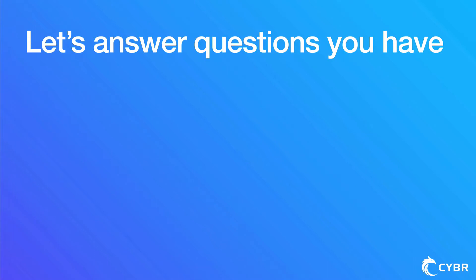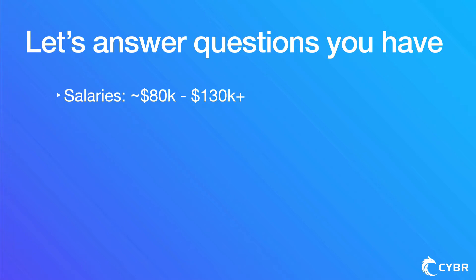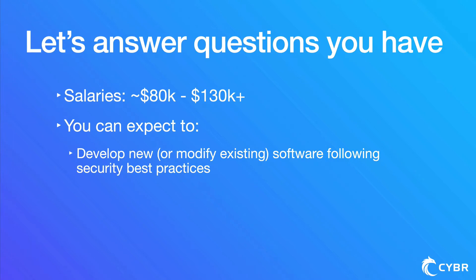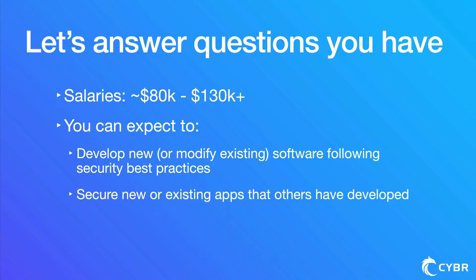Looking at all these questions, here's what we can generalize so far. Salary ranges are always hard because they depend on too many factors, but when looking at positions in Austin for entry level, most had a starting salary of just about $80,000. Getting to six figures is definitely achievable. As an application or software security engineer, you can expect to develop and write new or modify existing computer applications or software or utility programs, following security best practices — and that is a big part of this course.